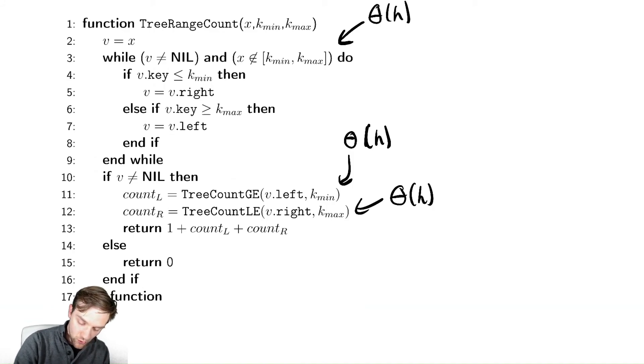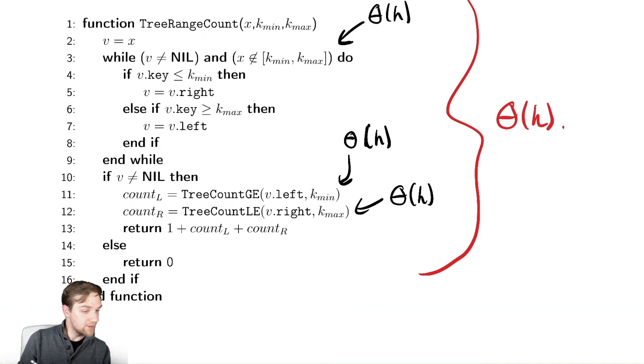So the whole algorithm all together is theta of h. Very convenient. So this is how we could implement this using the size to save us a lot of runtime. Notice we don't care how many values are in the range anymore, and we've improved our runtime substantially by doing this.